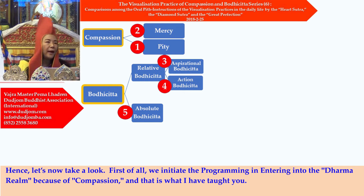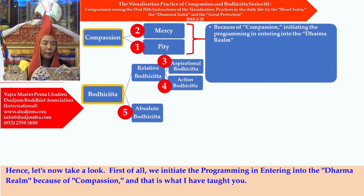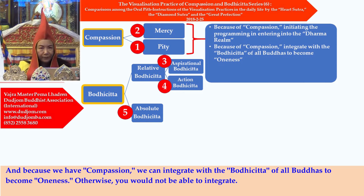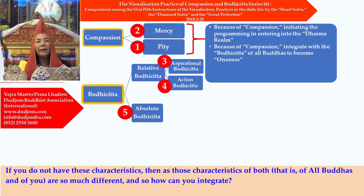Obviously, the absolute bodhicitta is the perfect enlightenment, but he does not know how to explain it. Therefore, you should know that this chart is not easy to draw. For this chart, I will explain from the first to the fifth steps to you, so that you can use it as a bird's-eye view to have a broad overview of the whole picture. First of all, we initiate the programming in entering into the Dharma realm because of compassion — and because we have compassion, we can integrate with the bodhicitta of all Buddhas to become oneness. Otherwise, you would not be able to integrate.